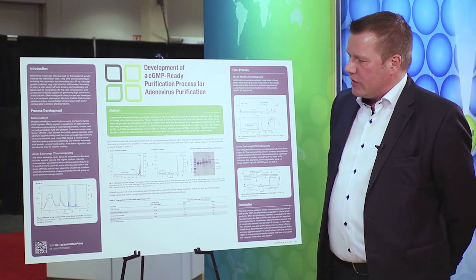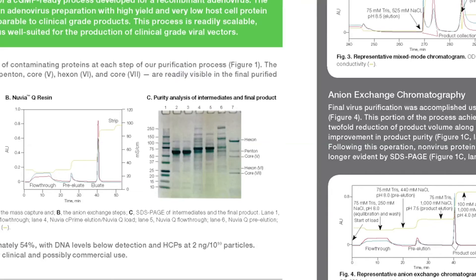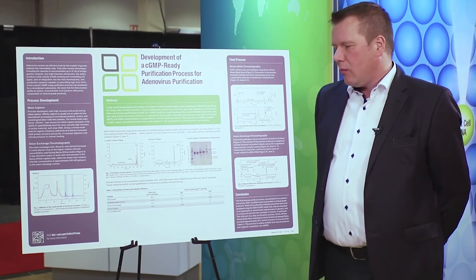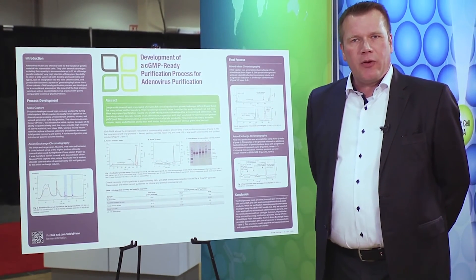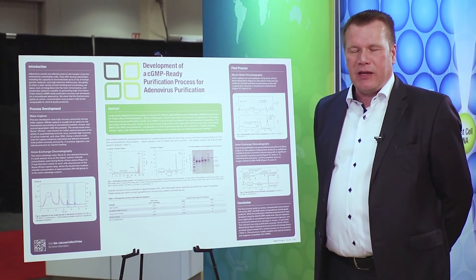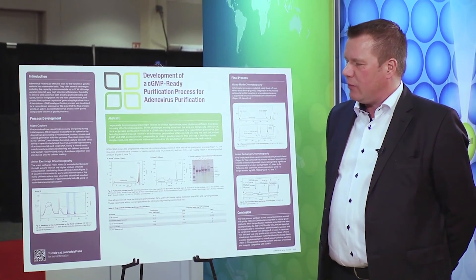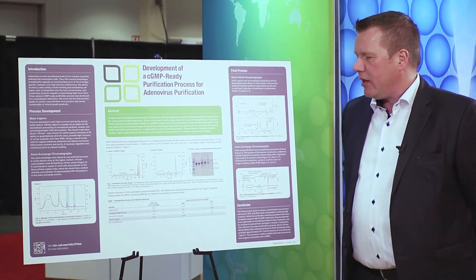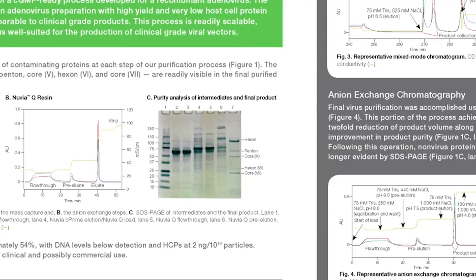To assess purity, we've been analyzing the virus proteins on an SDS-PAGE gel, shown on the right of the purification development summary. In the first lane you see the molecular marker to identify protein sizes. In the second lane you see the material loaded onto Nuvia C Prime, showing a major contamination at around 50 kilodaltons. The third lane outlines what is in the flow-through of the loading step of the Nuvia C Prime chromatography, and you can see that this contamination mainly goes through.